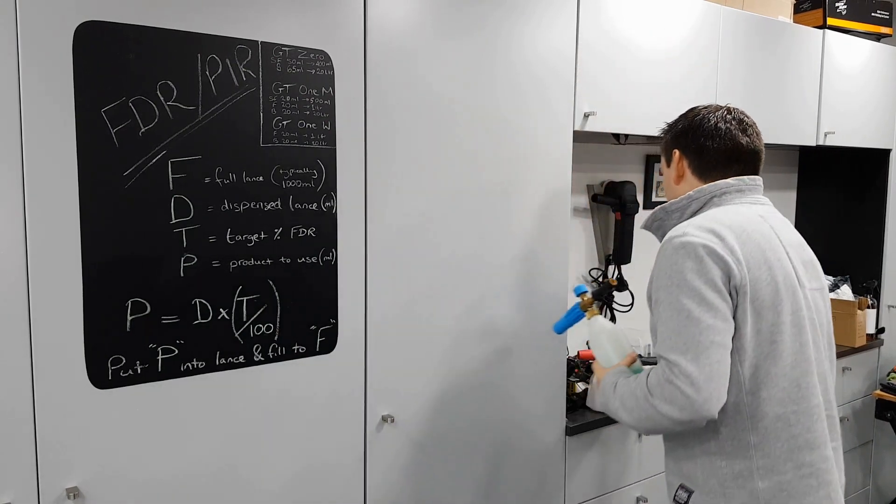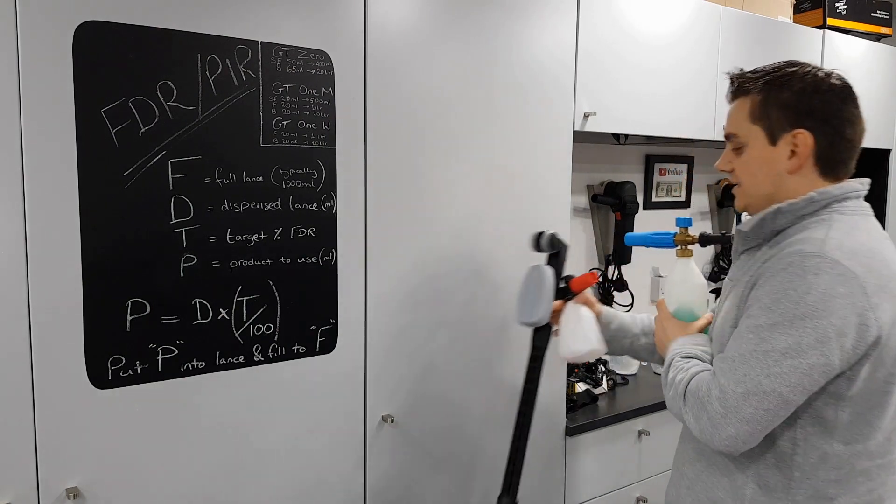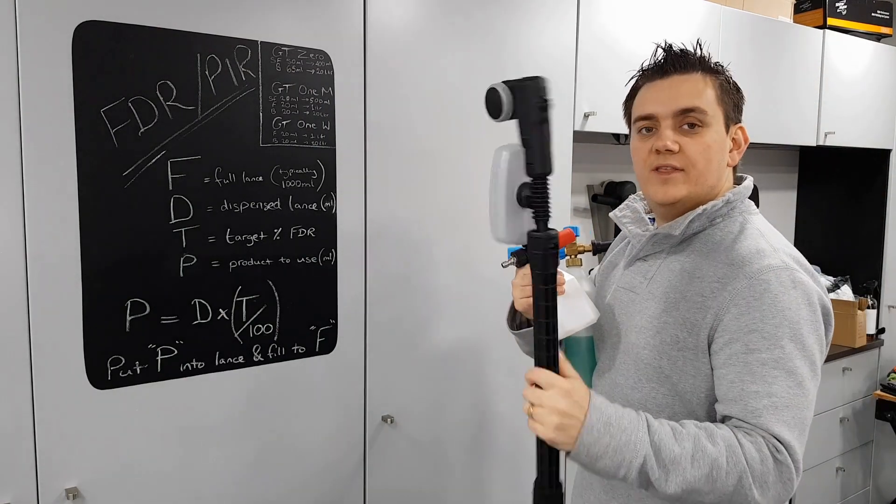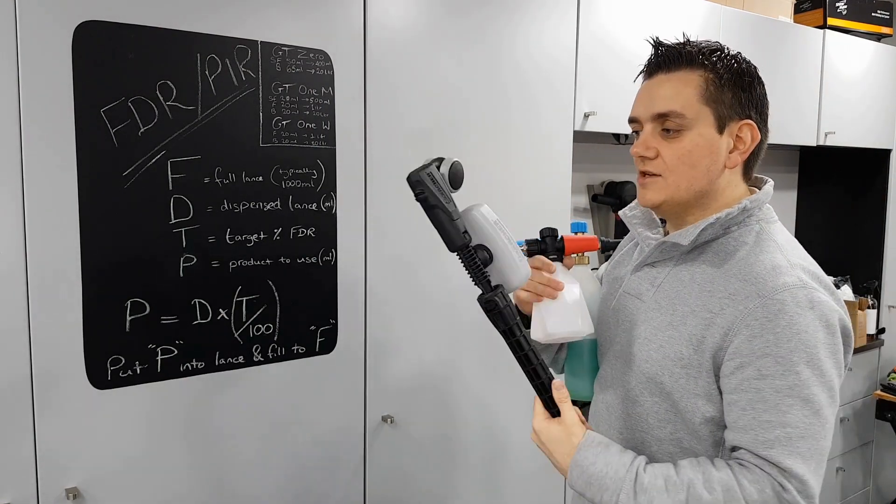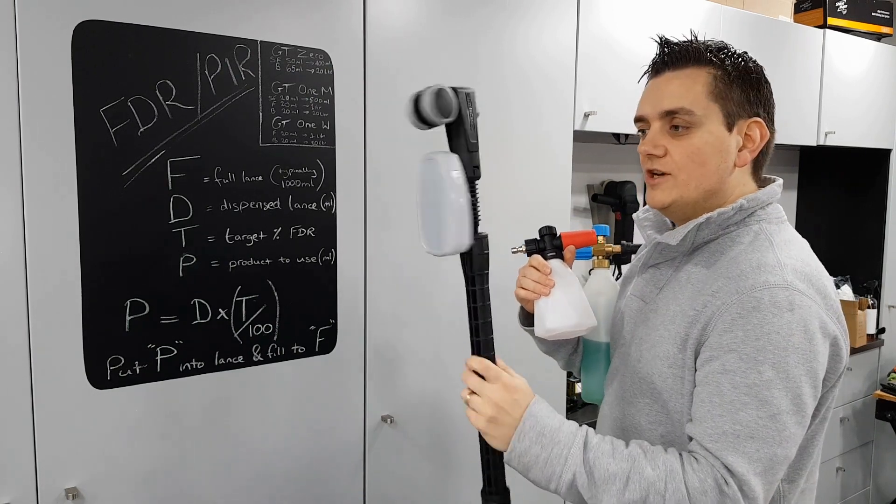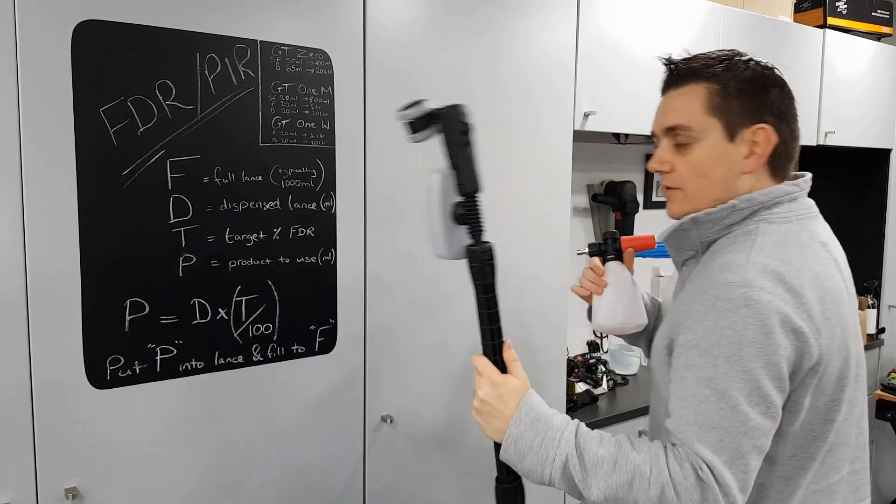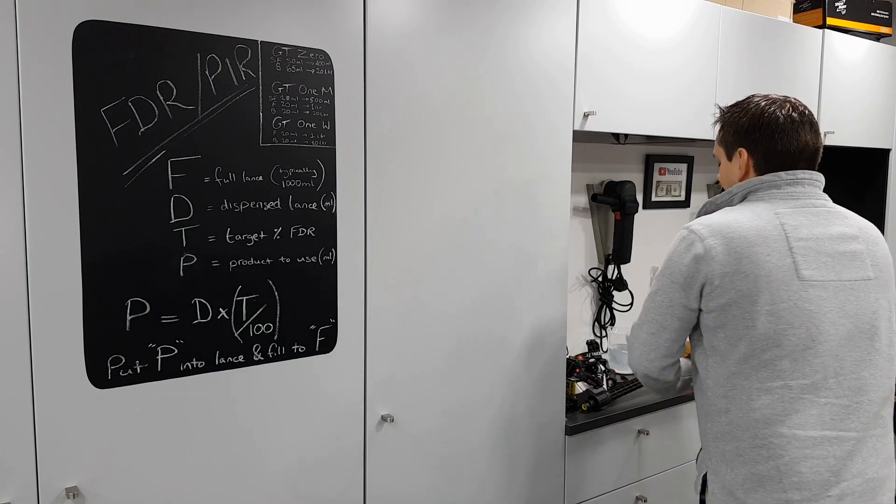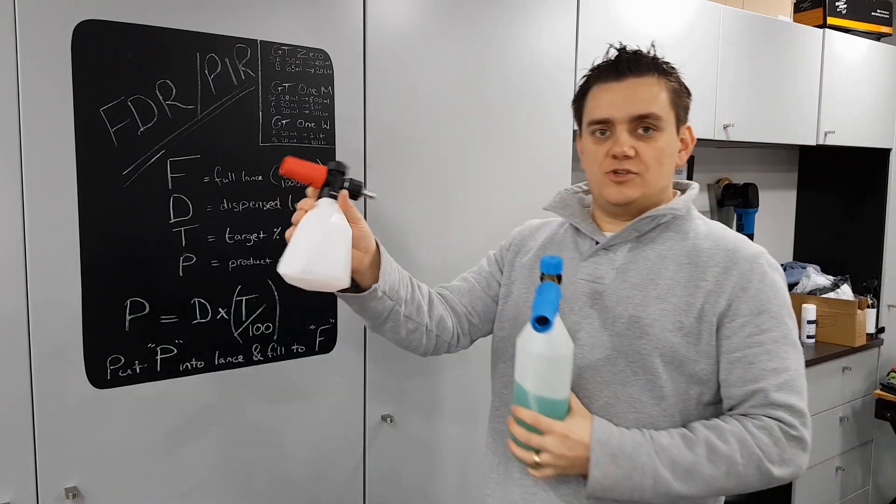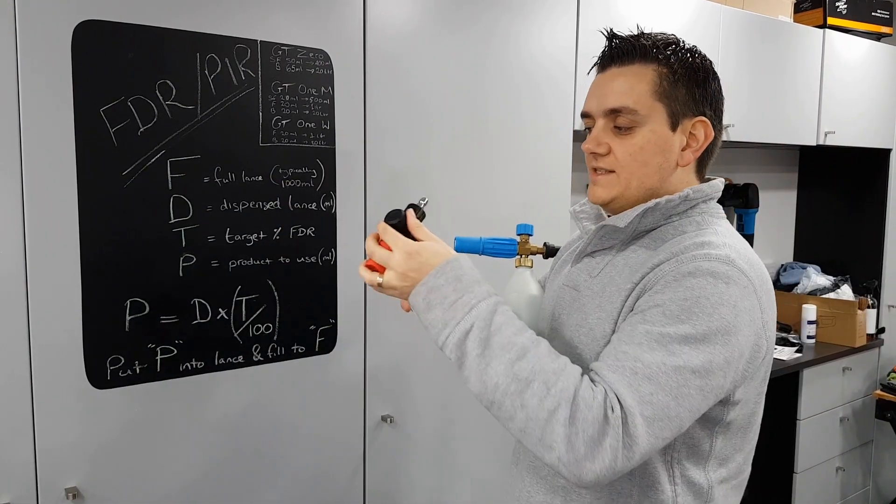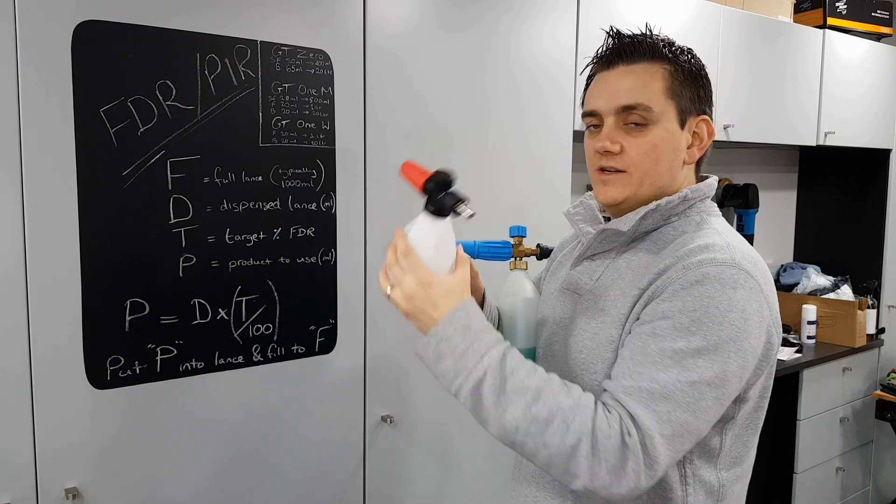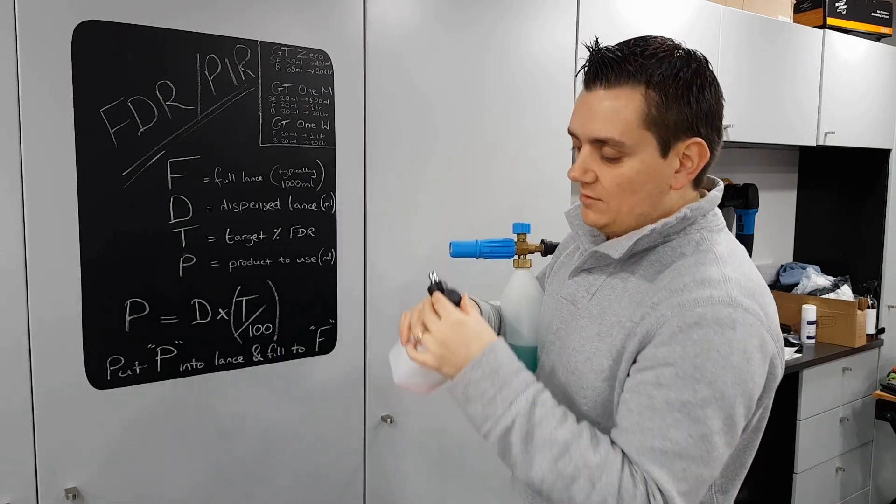Because that's typically how you use snow foams. It also makes a difference obviously if you're changing the setting. If you change the lance, so as I say I've used it today with this, this doesn't have any setting in terms of product to water ratios, but it is a different lance so it will have a different PI on. Again, I have these little cheap AliExpress foam lances. There is a video on these as well if you want to go and check that out.